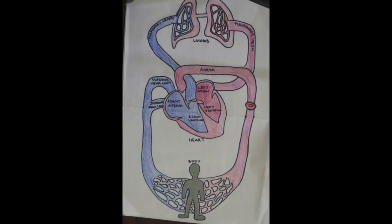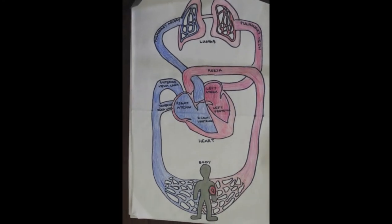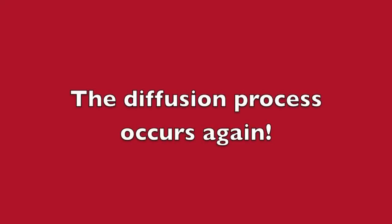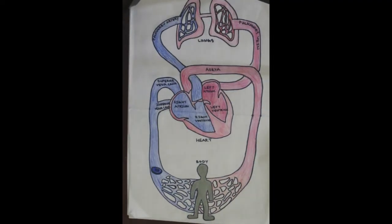Then the diffusion process occurs again and the oxygen and glucose are replaced by carbon dioxide and other wastes that the body produced. Then I take the CO2 to your superior vena cava or the inferior vena cava depending on where I am in the body. And then back to where it all started, the right atrium.